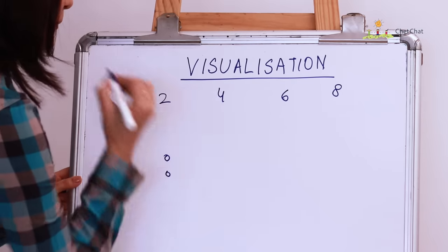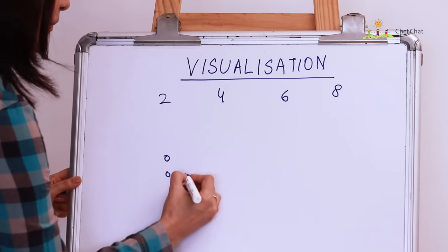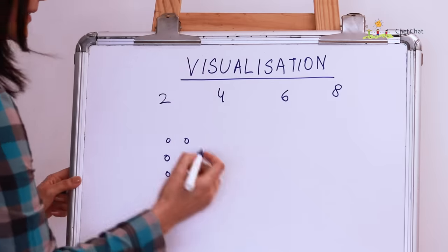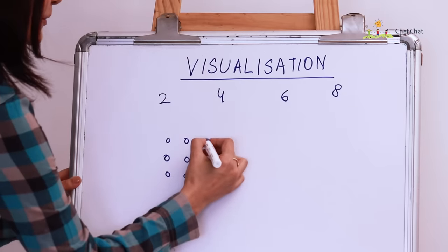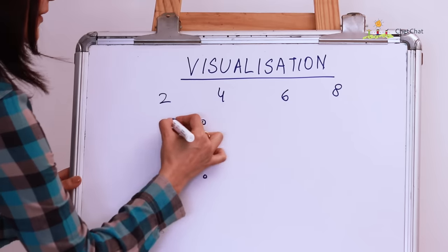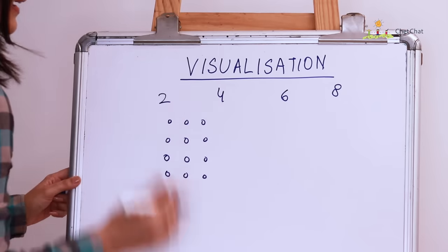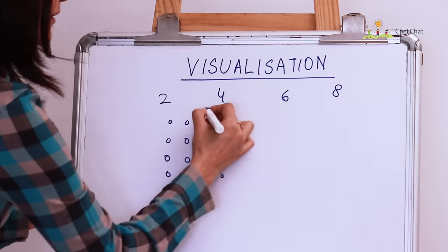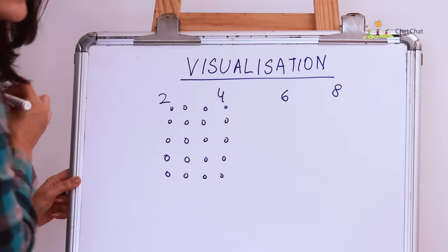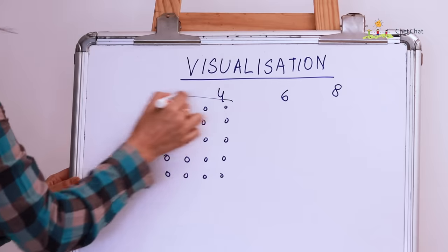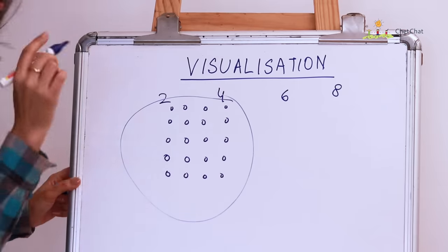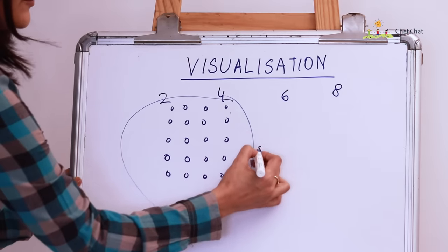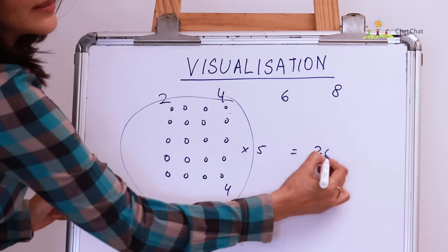So, 2, let's draw 2 and if I take 4, it's 1, 2, 3, 4 and if I take 6, it's 1, 2, 3, 4, 5, 6 and if I take 8, it's 1, 2, 3, 4, 5, 6, 7, 8. So, what have I got here is a square of 4 into 5 which is 20.